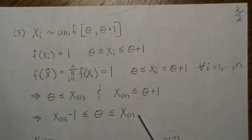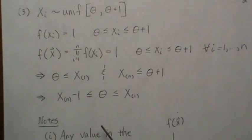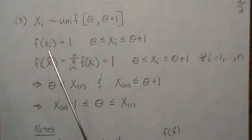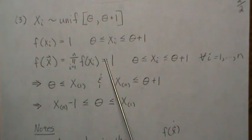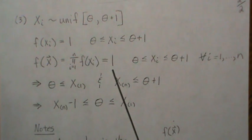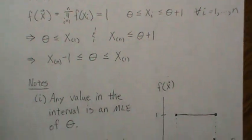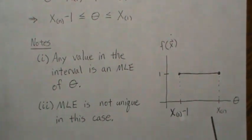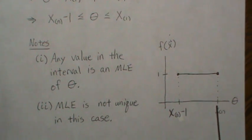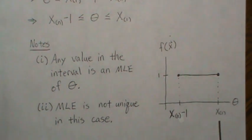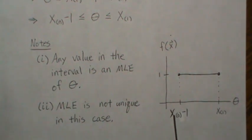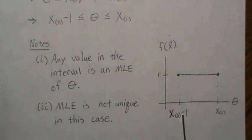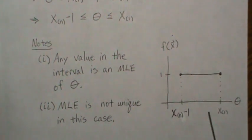Theta has to be between these two values. So now if we plot our likelihood of samples with sample size n, then it looks like this over here. Theta has to be less than or equal to X(1), and it has to be greater than or equal to the nth order statistic minus one.